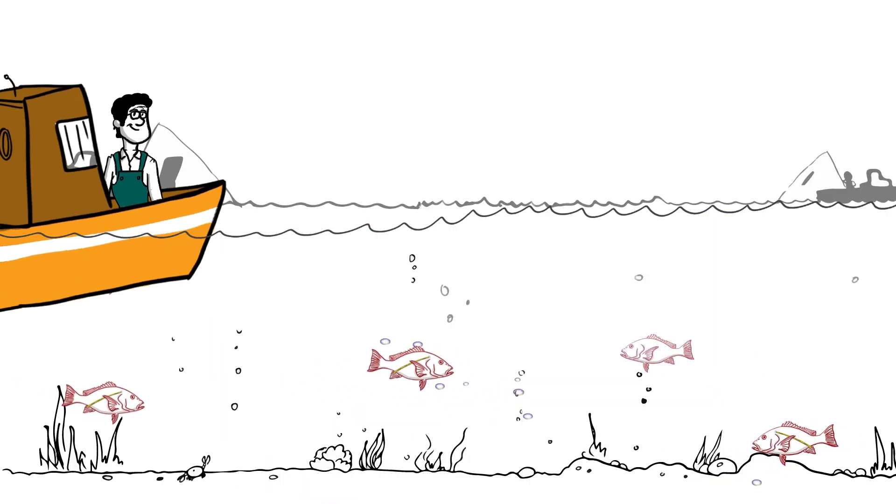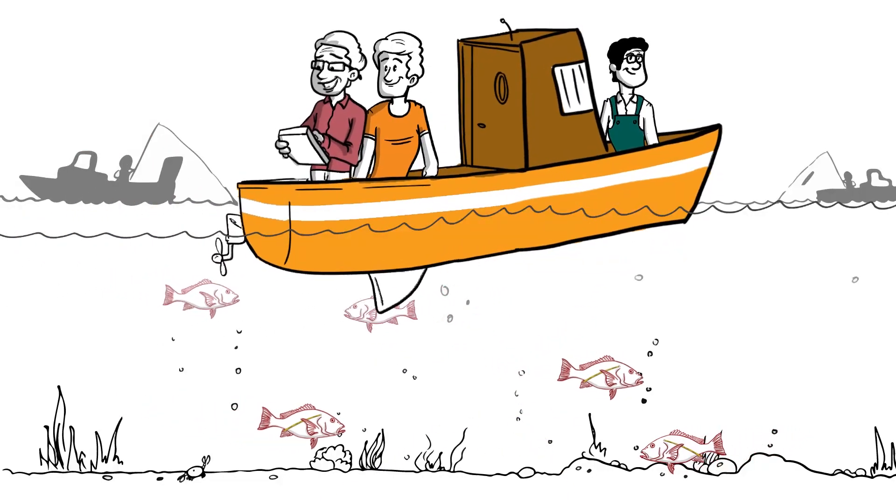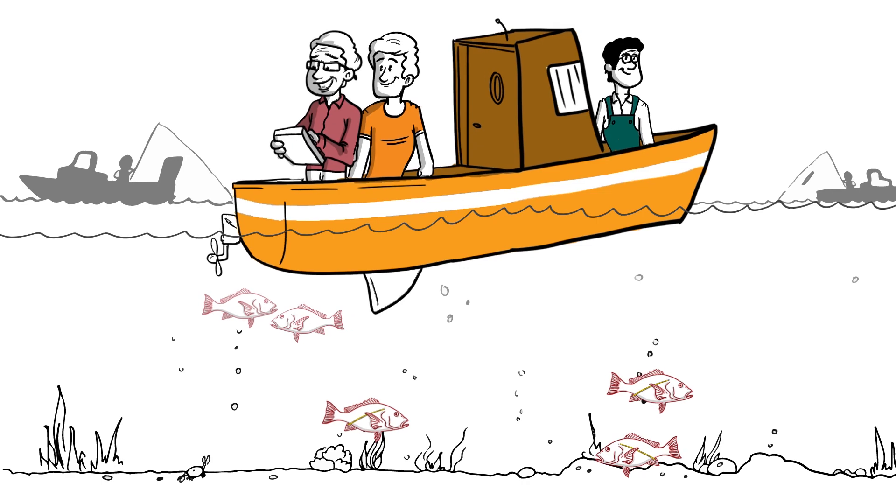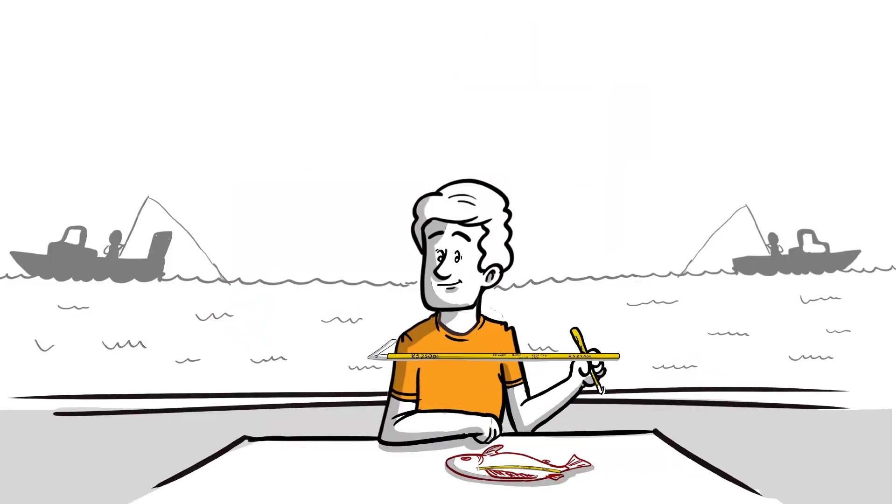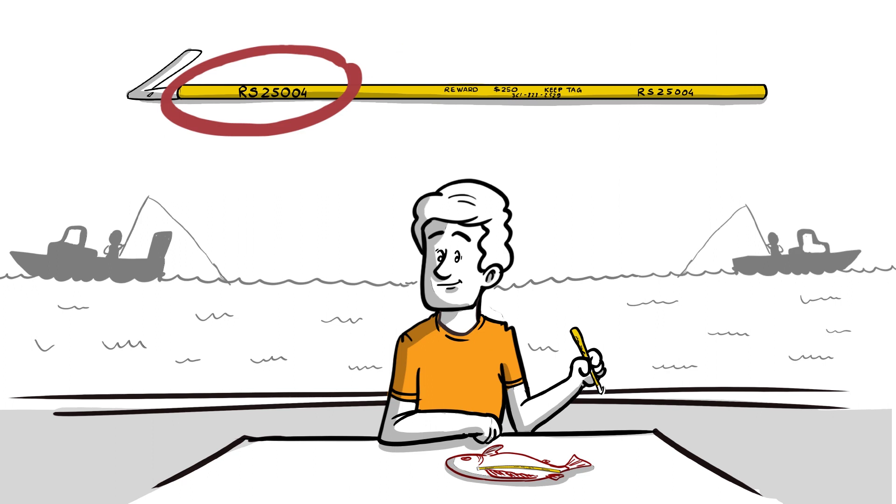To ensure consistency, all red snapper will be tagged by scientists working on the great red snapper count in collaboration with recreational and commercial fishers. Yellow tags with text beginning with RS followed by a unique five-digit ID number will be placed beneath the fish's dorsal fin.